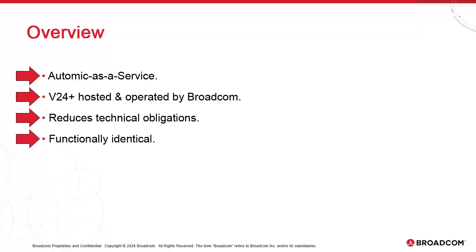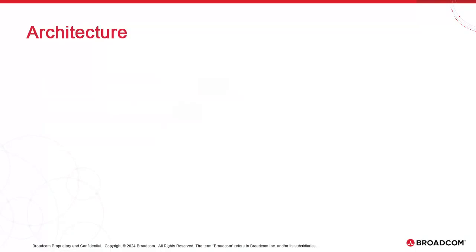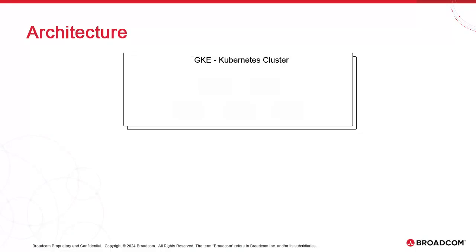From a functional perspective, the two models are identical. Anything that can be done in Atomic Automation on-premises can be replicated in Atomic SaaS. The architecture of Atomic SaaS is Atomic Automation Kubernetes Edition version 24. The main difference between conventional Atomic and Atomic SaaS lies in the scope of responsibilities and the substantial reduction of technical components that customers have to deploy and maintain.